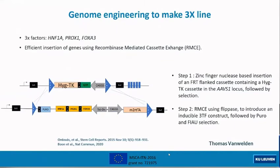First, we use a zinc finger nuclease to insert a flippase recognition site-flanked cassette consisting of a hygromycin TK selection. After this selection is done, we flip out this cassette with a plasmid which contains the flippase and the genes of interest, and select further until we have the line which contains the cassette.